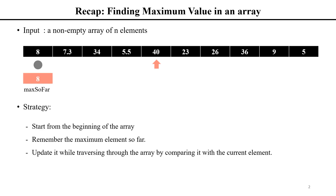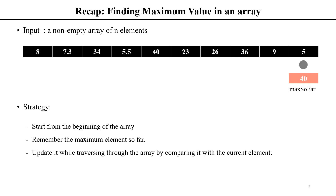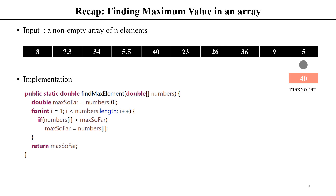The strategy we used is to start from the beginning of the array, keep a variable to remember the maximum element we have seen so far, and while traversing through the array, we compare this max element with each current element we are visiting and update it if needed. The way we achieve this in Java is by using a for loop to go through the indices of the input array and accessing the elements using the index. Today we're going to use this strategy as a subroutine to solve another problem.